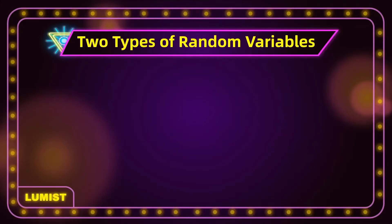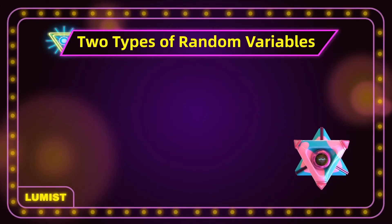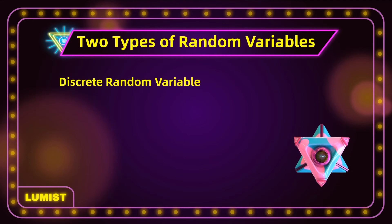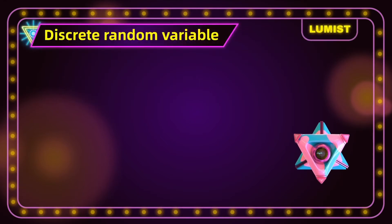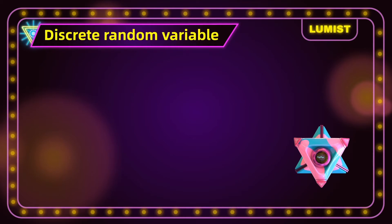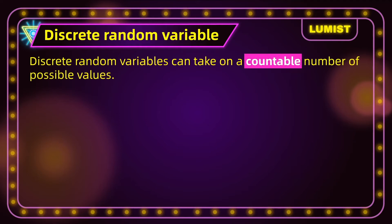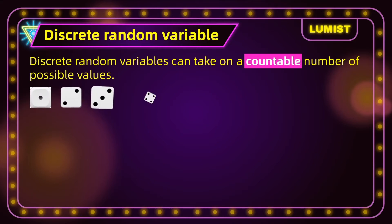There are two types of random variables: the discrete random variable and the continuous random variable. Let's start with discrete random variables. Discrete random variables can take on a countable number of possible values. For example, when rolling a die, the possible values we can get are 1, 2, 3, 4, 5, and 6. There are 6 possible values. This is a countable amount.